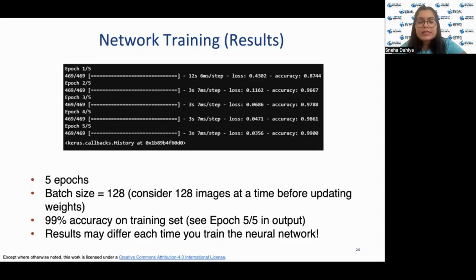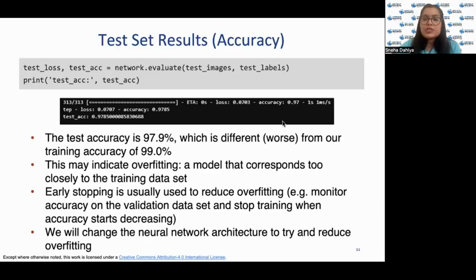But one might suspect a problem of overfitting here. To detect that, we'll look at the test dataset results. To calculate the accuracy for our test datasets, we will run the following code. As you can see from the output, we are seeing that there is an accuracy of 97.85%, almost 97.9%, which is different and worse from our accuracy of the training dataset. So this indicates overfitting. Now, you might ask what overfitting is.